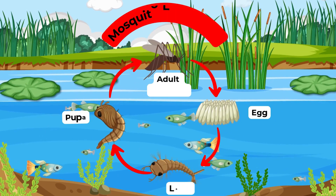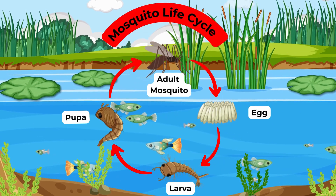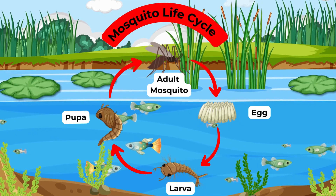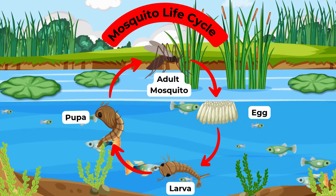Did you know that mosquitoes go through four stages in their life cycle? Let's find out what these stages are.